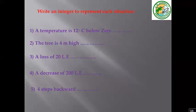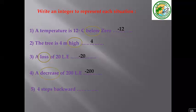Write an integer to represent each situation. Number one: a temperature of 12 degrees below zero — the word 'below' is a keyword indicating negative 12. Number two: 4 meters high — the keyword 'high' means positive 4. Number three: a loss of 20 LE — the word 'loss' means negative 20. Number four: a decrease of 200 LE — 'decrease' means negative 200. Number five: four steps backward — 'backward' indicates negative 4.